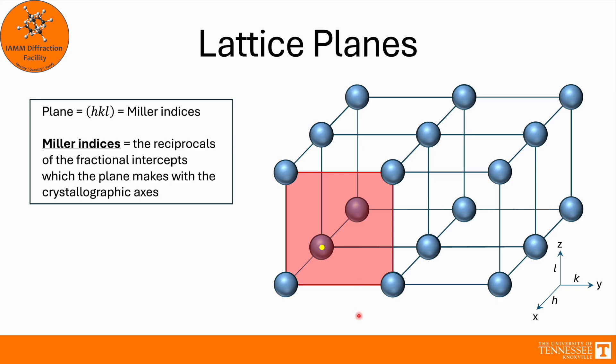So this plane here intercepts the x-axis at 1, and then it never touches the y or z-axis. We have to give some sort of number to that, so we say this plane crosses the y and z-axis at infinity. To then get our plane designation, we take the reciprocals of these values. 1 over 1 is 1, 1 over infinity is 0, so that gives us the (1,0,0) plane.